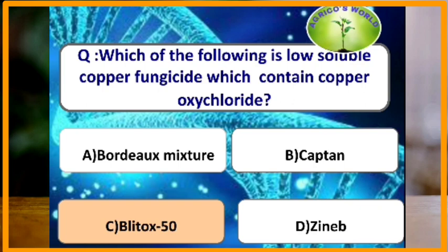Which of the following is a low-soluble copper fungicide containing copper oxychloride? The answer is Blitox 50. These compounds are less soluble than Bordeaux mixture and also less phytotoxic than Bordeaux mixture.